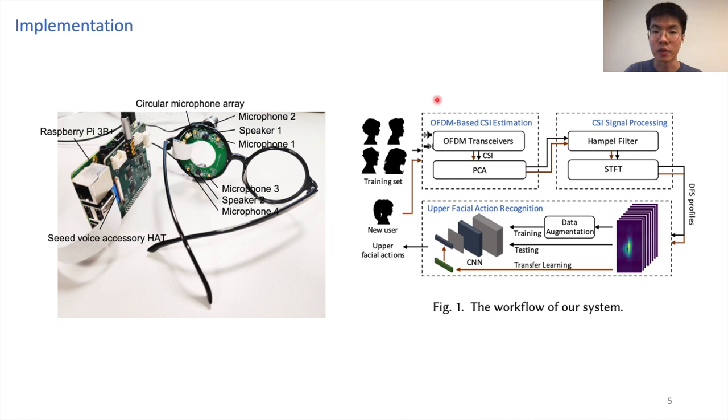The main idea of our software solution is to use channel state information, or CSI, as a tool to sense the skin deformation patterns caused by the UFAs, and we use deep learning techniques for classification.